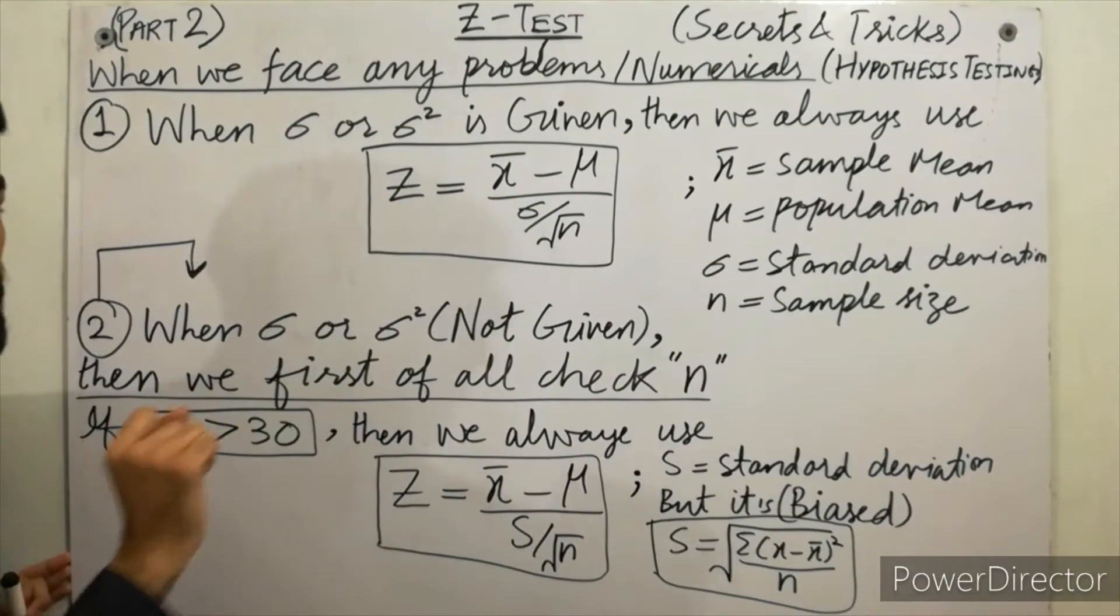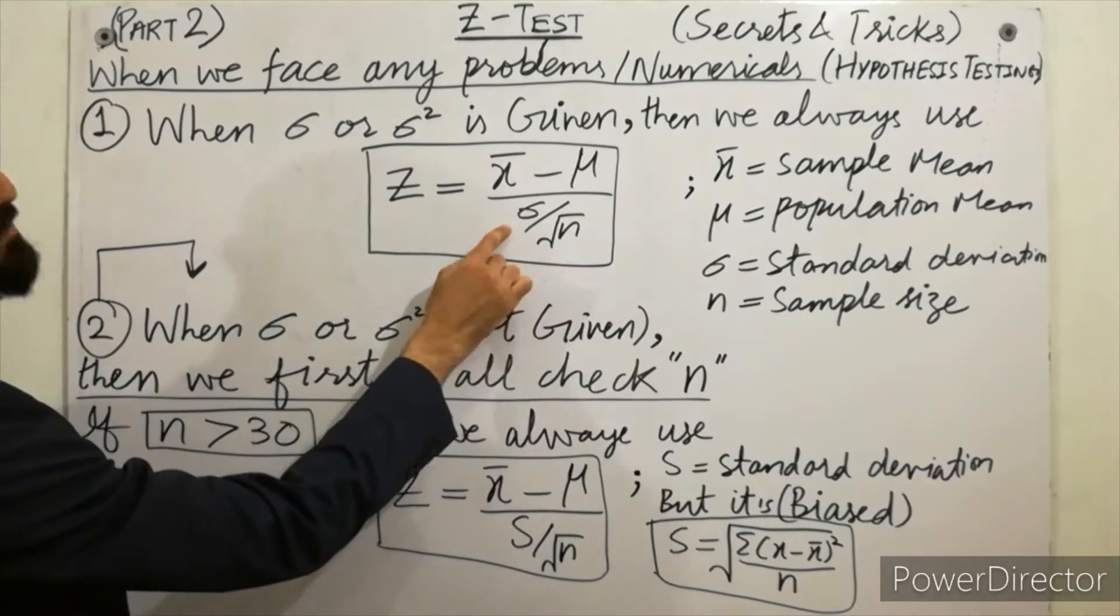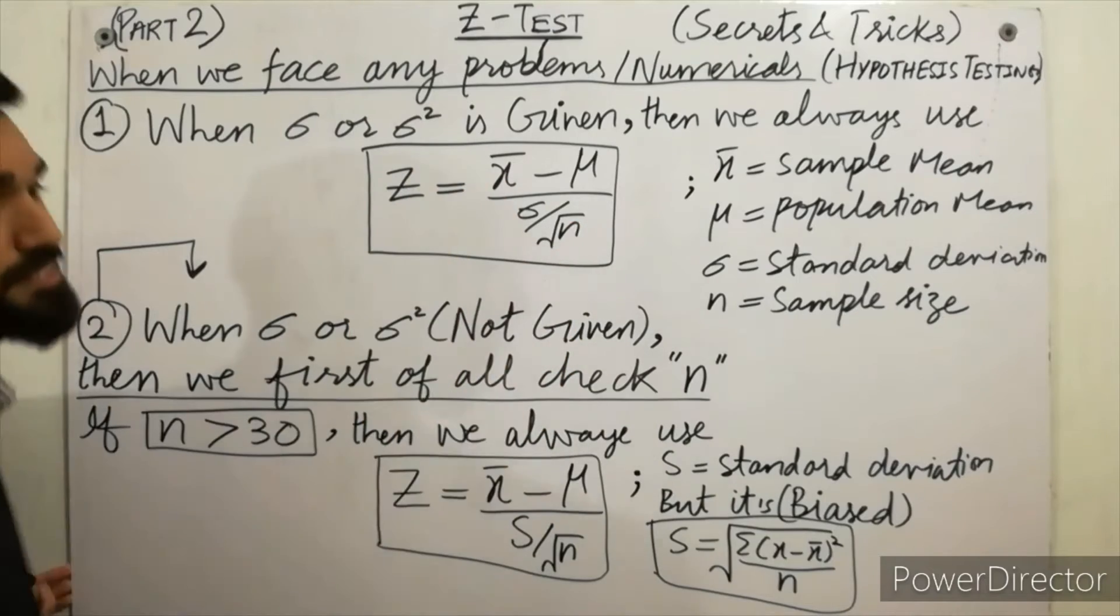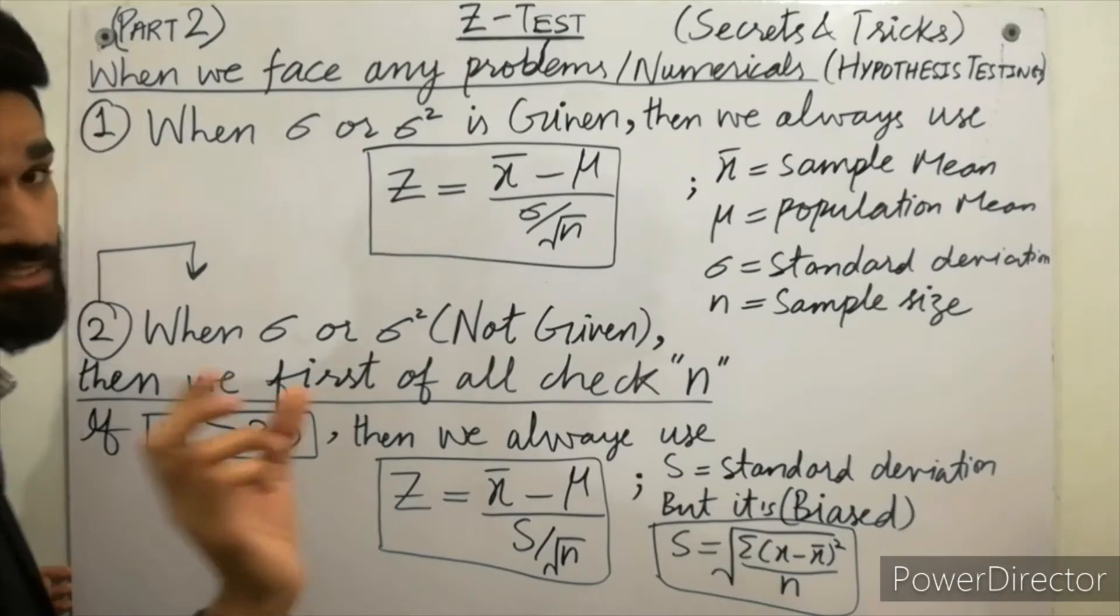Where x̄ is the sample mean, μ is the population mean, σ is the standard deviation, and n is the sample size. Must remember, the first part is very easy. The second part is difficult.